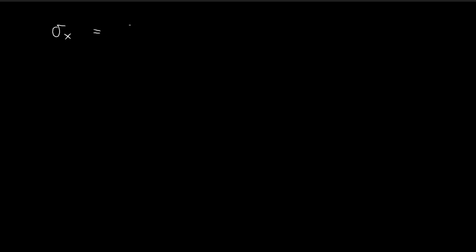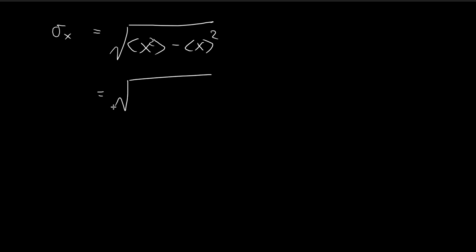Now we're going to check the uncertainty principle. The first thing we need is the standard deviation of x, which is equal to the square root of the expected value of x squared minus the expected value of x, squared. Based on what we found in the last video, the expected value of x squared is equal to n plus one-half times h-bar divided by m omega. The expected value of x is zero, so we can ignore that term.